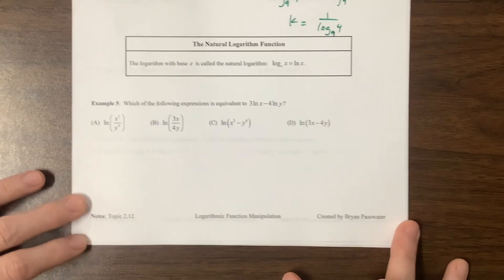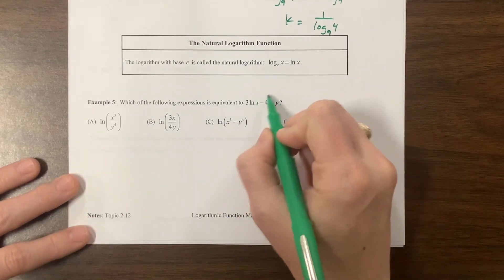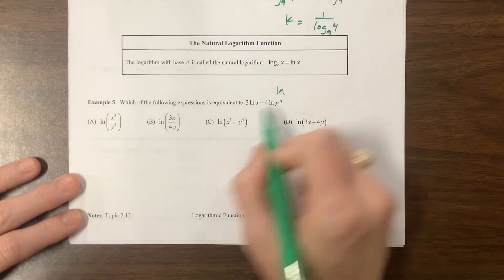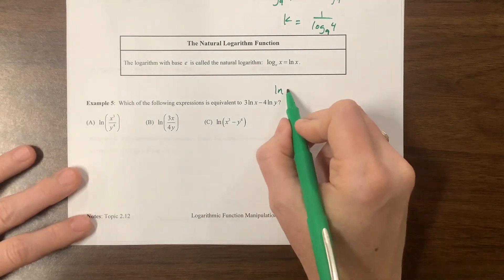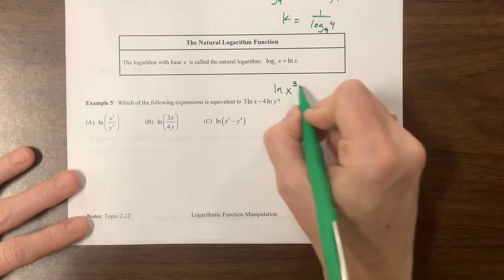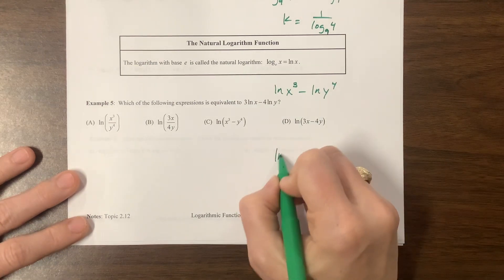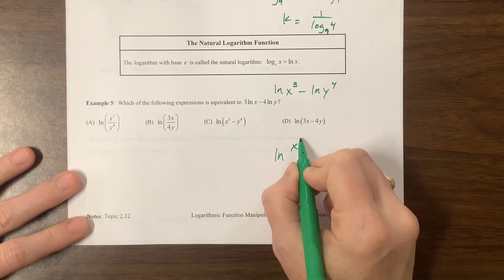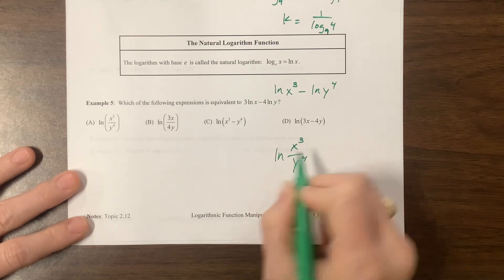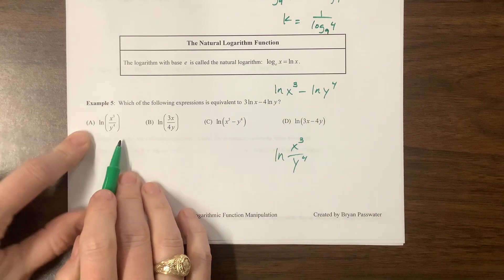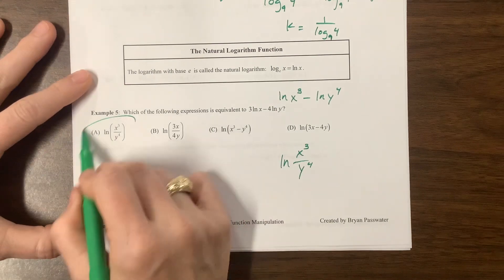Which of the following is equivalent here? Well, so this becomes the natural log. Natural log just means it has a base of e. So this is ln. All the properties are still the same. 3 ln of x minus ln of y to the 4th. Subtraction gets squished together with division. Natural log of x cubed over y to the 4th. x cubed over y to the 4th. There it is.